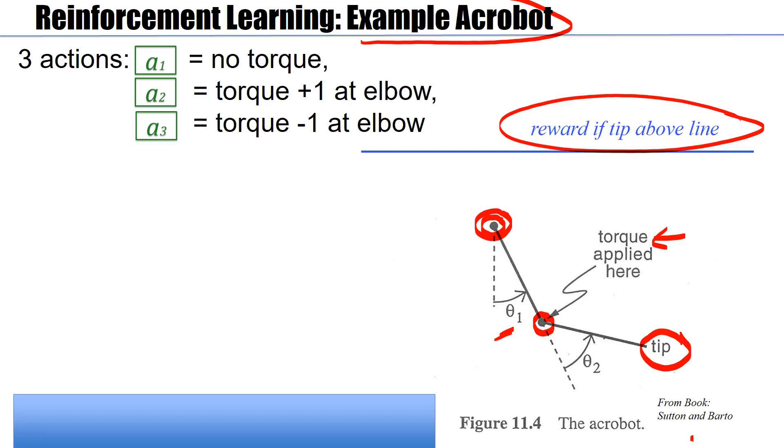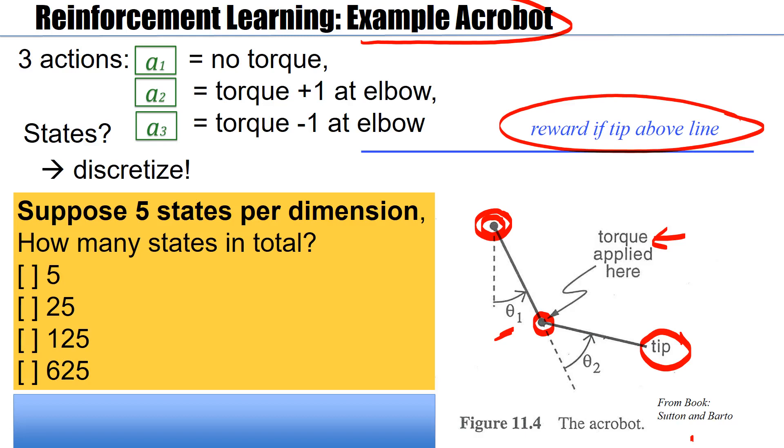And so you have to swing it up, and you only get the reward once you are above this line here, once the tip is above this line. Okay, so the state space really is continuous. But now let's discretize. So how can we discretize? Let's make it simple. Let's suppose I have five states per dimension. Five states per dimension. And then how many states are there in total? 5, or 25, or 125, or 625? Please pause the video for a moment and think. And I give the answer now. The answer is 625.